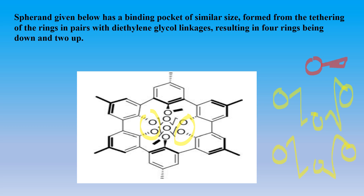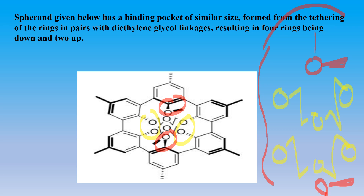Two oxygen atoms remain free, and the structure has only an anisyl ring at those positions. The red-colored marked oxygen atoms do not possess any diethylene glycol linkage. The yellow-colored marked oxygen atoms have the diethylene glycol linkage, which is drawn on the right-hand side. In this way the arrangement is formed, and it also exhibits some type of binding effect.